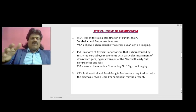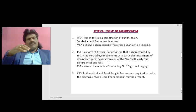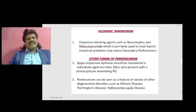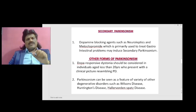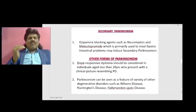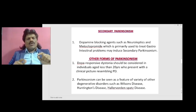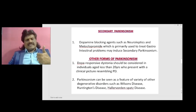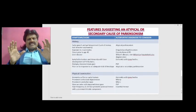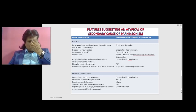Secondary parkinsonism: dopamine blocking agents such as neuroleptics and metoclopramide, which is primarily used to treat gastrointestinal problems, may induce secondary parkinsonism. Dopa-responsive dystonia should be considered in individuals aged less than 20 years who present with a clinical picture resembling Parkinson's disease. Parkinsonism can also be seen as a feature of other degenerative disorders such as Wilson's disease, Huntington's disease, and Hallervorden-Spatz disease.